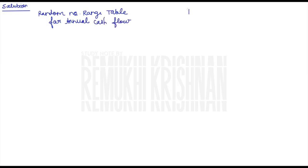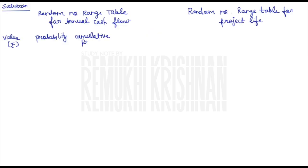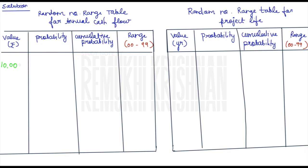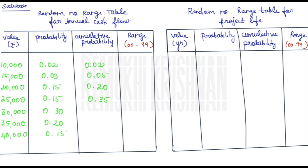The first step is to find the random number range table. Since we have two things to determine — annual cash flow and project life — for each we write: value, probability (as given in the question), cumulative probability, and then the range. The range starts from 00 to 99. After probability, find the cumulative probability, and from that derive the range. At the end, the cumulative probability should sum to 1, confirming everything is in the right place.